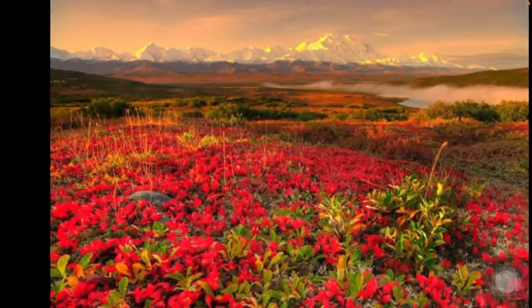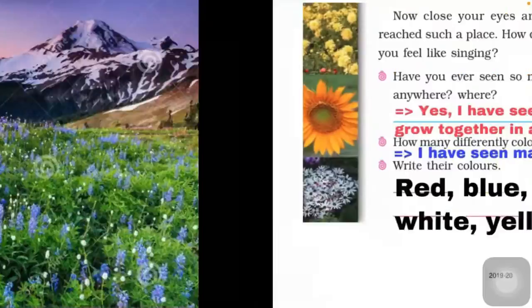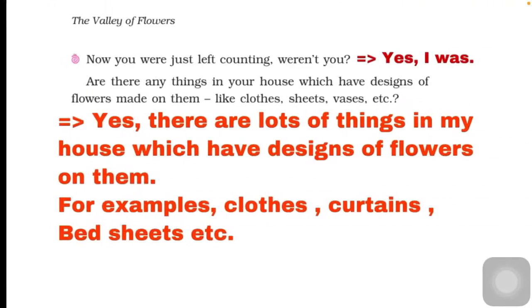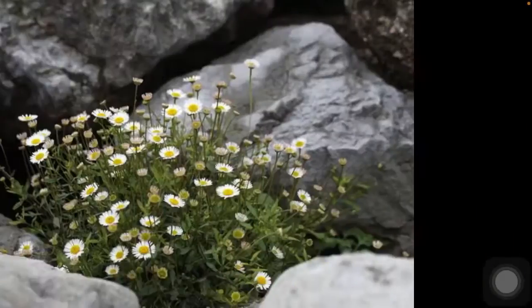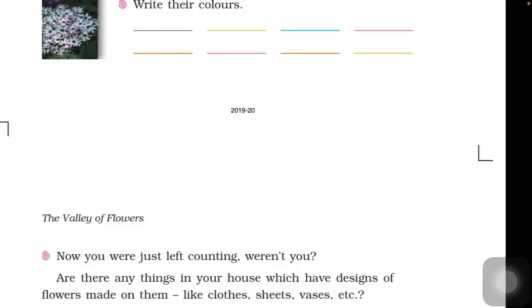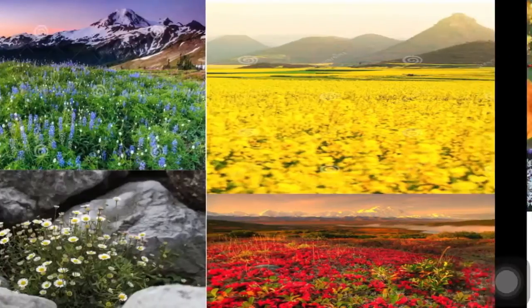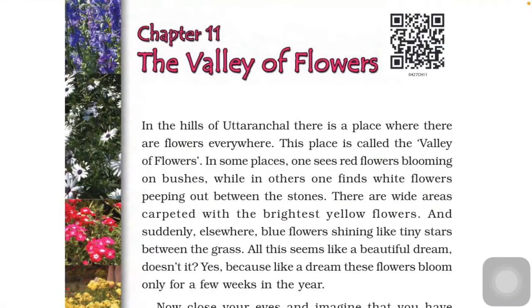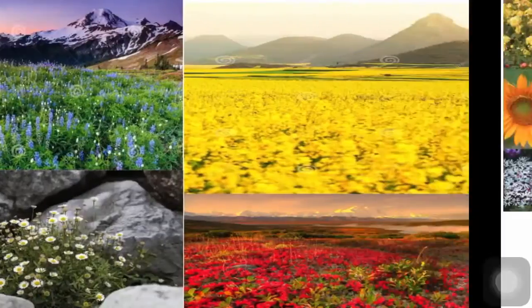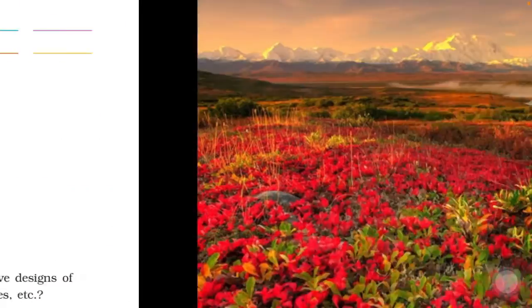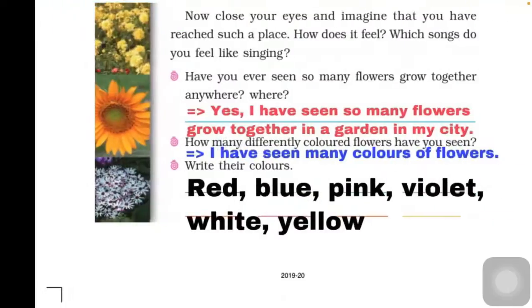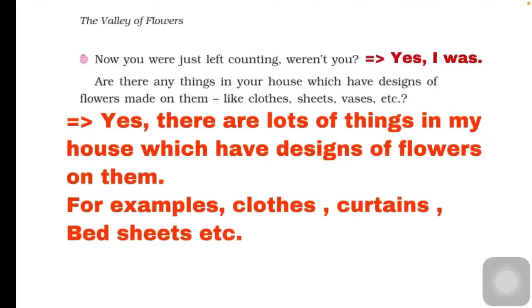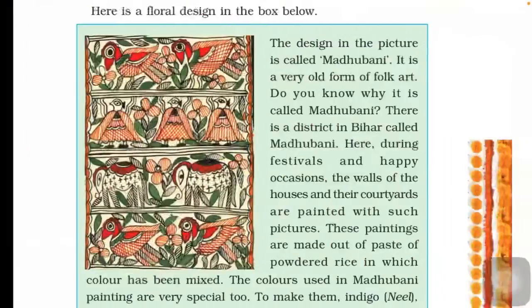In the last session we already discussed about the different types of flowers and the place where lots of flowers are located. The name of that place is Uttaranchal. You can also see the Uttaranchal place on your India map.